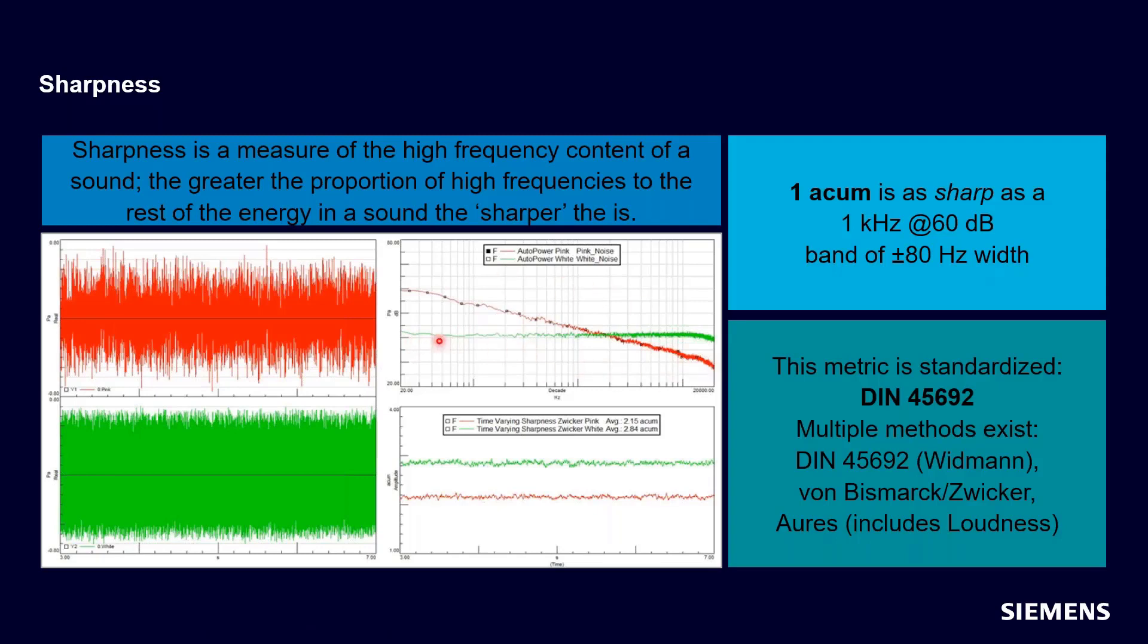So if I calculate, white noise is green here, nice and flat in the narrow band. Pink noise is continually falling in the narrow band. And so if I calculate the sharpness of these two, white noise is sharper, 2.84 acums versus 2.15. And you see, we can objectively measure how much sharper white noise is than pink noise.